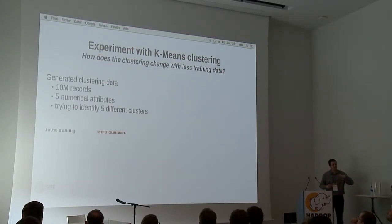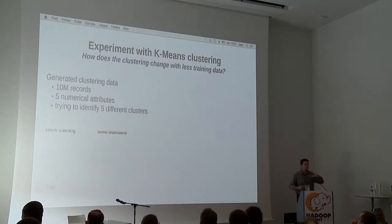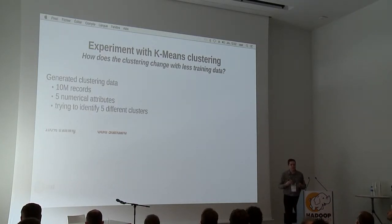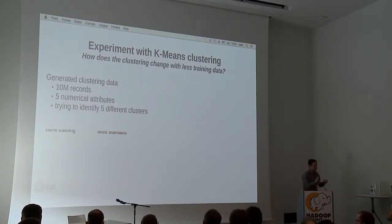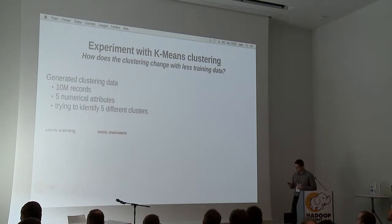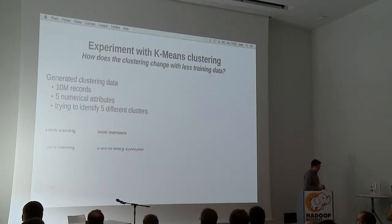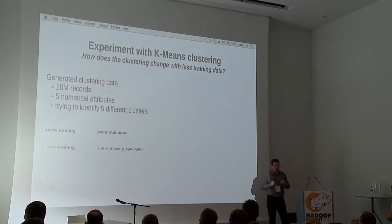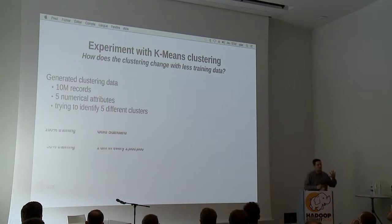In terms of clustering, you can measure the difference between two clusterings by seeing how many records belong to different groups. When I downsampled to 50% of the data, I found that only one out of every 2 million records changed clusters — meaning out of 10 million records, only 5 data points became part of a different cluster.